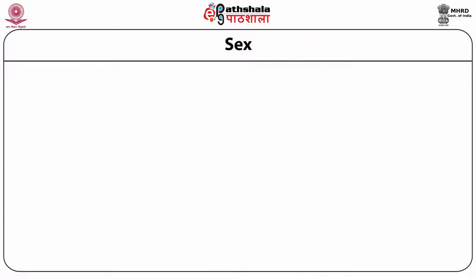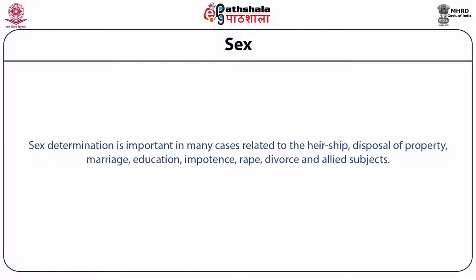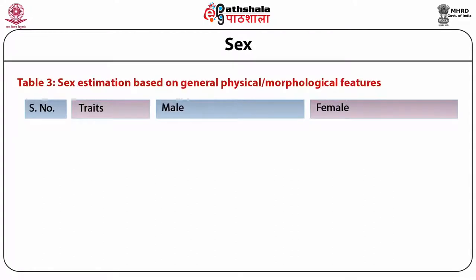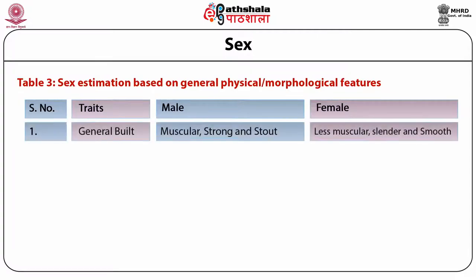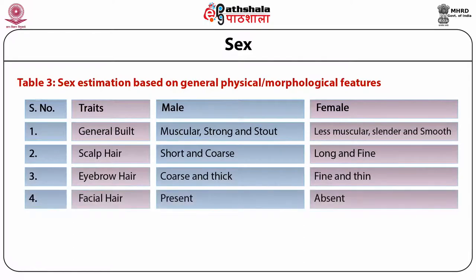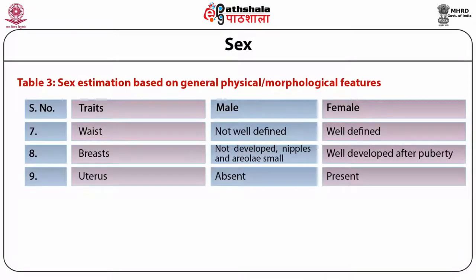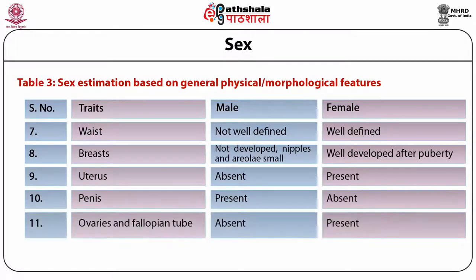The next characteristic used for identification is sex. Sex determination is important in many cases related to heirship, disposal of property, marriage, education, impotence, rape, divorce and allied subjects. Sex can be easily determined on the basis of general physical or morphological features which include general build, scalp hair, eyebrow hair, facial hair, pubic hair, shoulder, waist, breast, uterus, presence of penis, and presence of ovaries and scrotum.